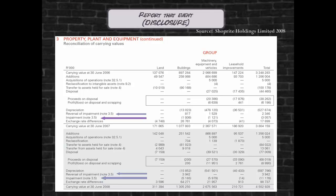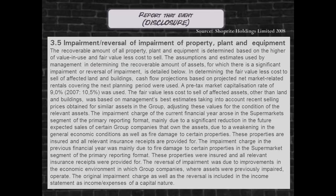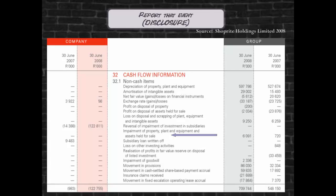Impairment losses or reversals thereof are disclosed in the related assets notes. Detailed disclosure of the event leading to the impairment as well as information on the recoverable amount is required. Although not addressed in IAS 36, impairment losses are non-cash flow items for purposes of the Statement of Cash Flows.